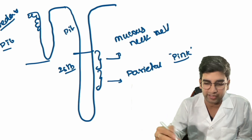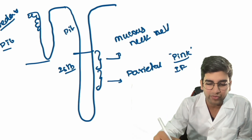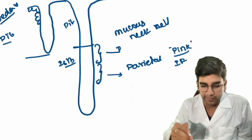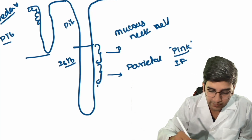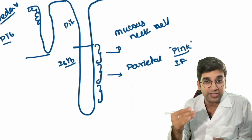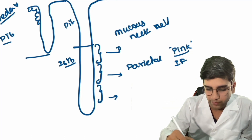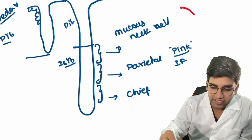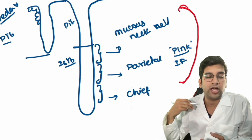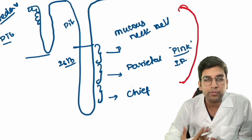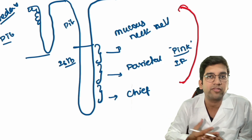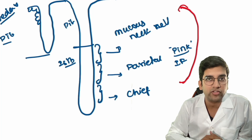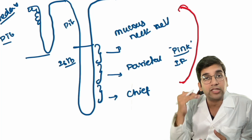Parietal cells secrete hydrochloric acid and will generally be pink in color. They also secrete intrinsic factor. Anything with ions like HCl or intrinsic factor will have a pinkish hue in light microscopy — purely pink. Towards the neck and the base, you have your zymogen cells, or chief cells. You'll see predominantly parietal and chief cells in the gastric fundus.